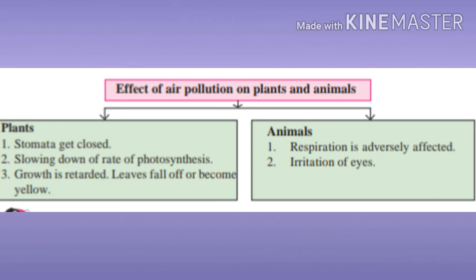Growth is retarded, meaning stopped. Leaves fall off or become yellow. Now the effects of air pollution on animals: respiration is adversely affected, and also there is irritation, meaning burning of eyes.